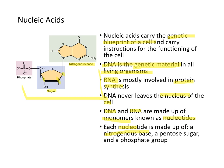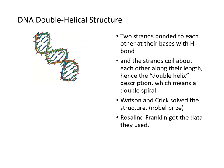Each nucleotide has a nitrogenous base, a pentose sugar — pentose meaning 5 carbons — and a phosphate group. DNA is a double helical structure; two strands are bonded to each other at the bases using hydrogen bonds. Each strand coils about the other, which is where the name double helix comes from. Watson and Crick solved this structure and won the Nobel Prize, but Rosalind Franklin was the crystallographer who generated the data.